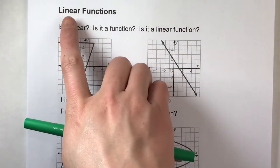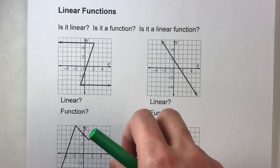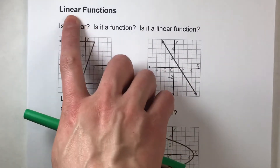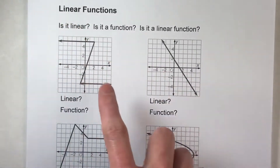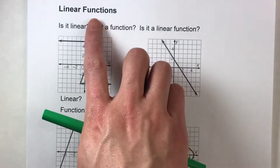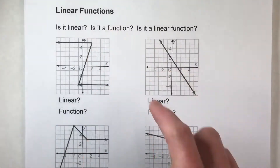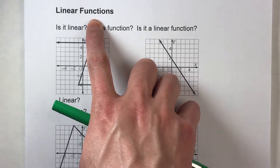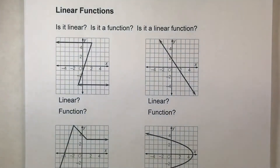Today we are going to be looking at linear functions and determine if graphs represent linear functions. In order for something to be a linear function it has to be two things: it has to be both linear and a function. If it's linear, the graph will just be a straight line. For it to be a function, for every input there's only one output — meaning for every x there's only one y — and the easiest way to check for that is using the vertical line test.